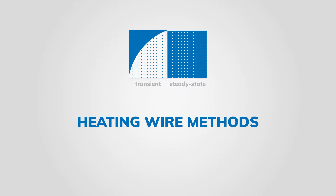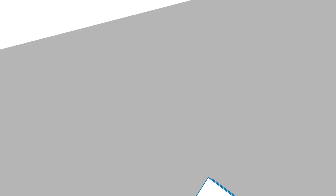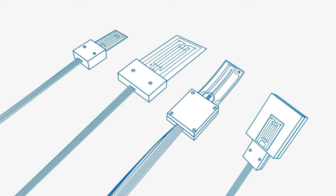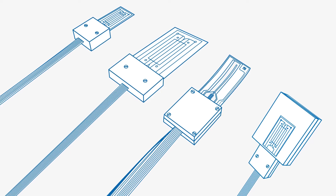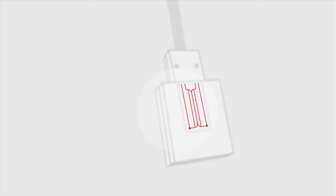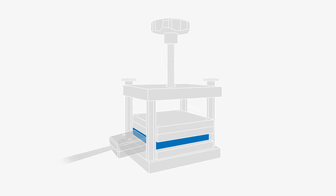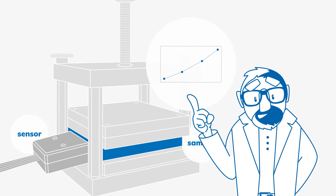Hot wire and heating strip methods are widely used – for example, in the transient hot bridge method – and also belong to the transient measurement methods. They can be found in various sensor configurations and offer the broadest possible range of applications and measurements. Embedded in a substrate, the heating wire emits a constant heat flux during the measurement, which causes a time-varying temperature distribution in the sample and the sensor itself. The temperature rise over time is measured by an integrated thermometer, from which the thermal transport properties of the material can be determined.